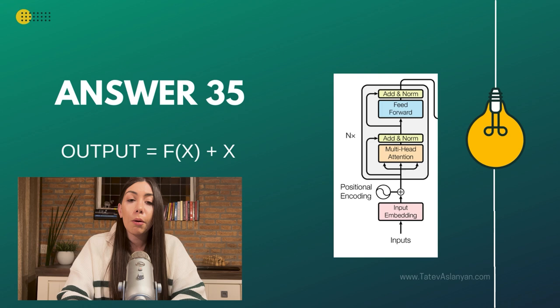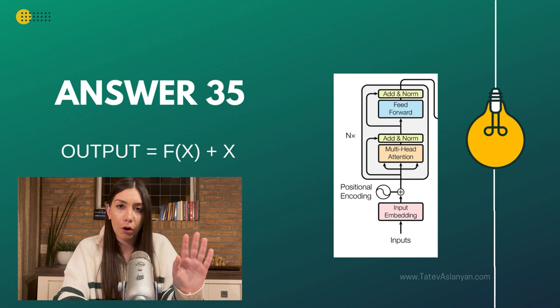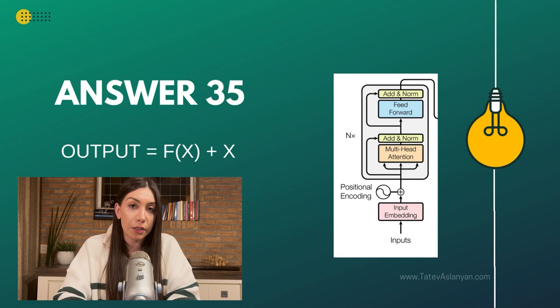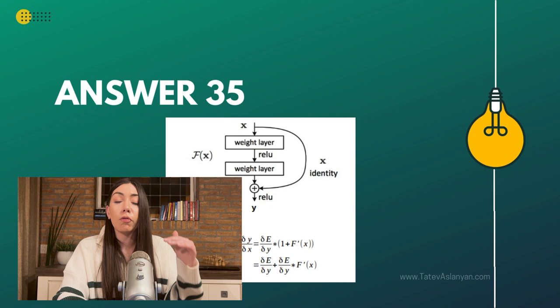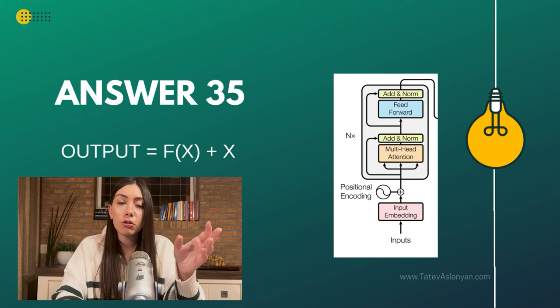Going back to the example of the transformer model in the original paper Attention is All You Need, you may recall the encoder part of the transformer architecture. It is also used as part of the GPT series — the generative pre-trained model — where we use the input embeddings plus positional encodings based on sinusoids and cosinusoids. After that, we transform this into queries, keys, and values, which then go as input to the multi-head attention layer.